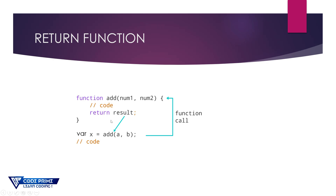Add a variable with the same function name and provide some value, then print it using the document section. Whatever value we provide in the function, that value will be returned, and the variable X will hold whatever result we write in the code section.